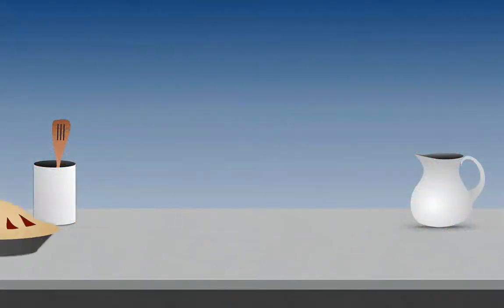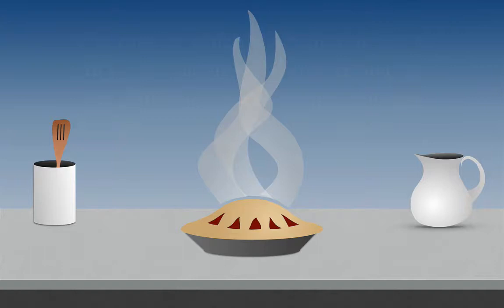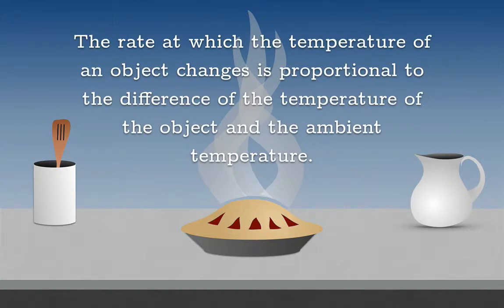Here's a qualitative statement of Newton's law of cooling. The rate at which the temperature of an object changes is proportional to the difference of the temperature of the object and the ambient temperature. You may simply take this as an empirical statement about what happens when you actually measure the temperature of hot and cool objects as they're introduced into a thermal reservoir.